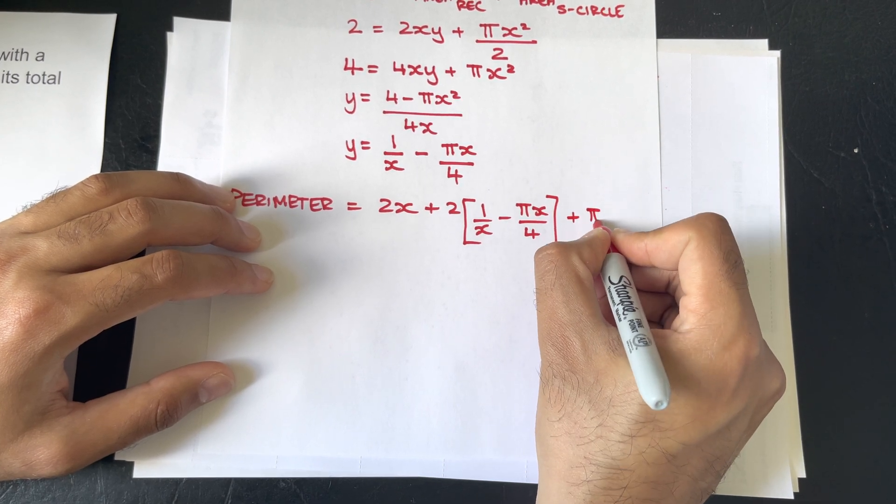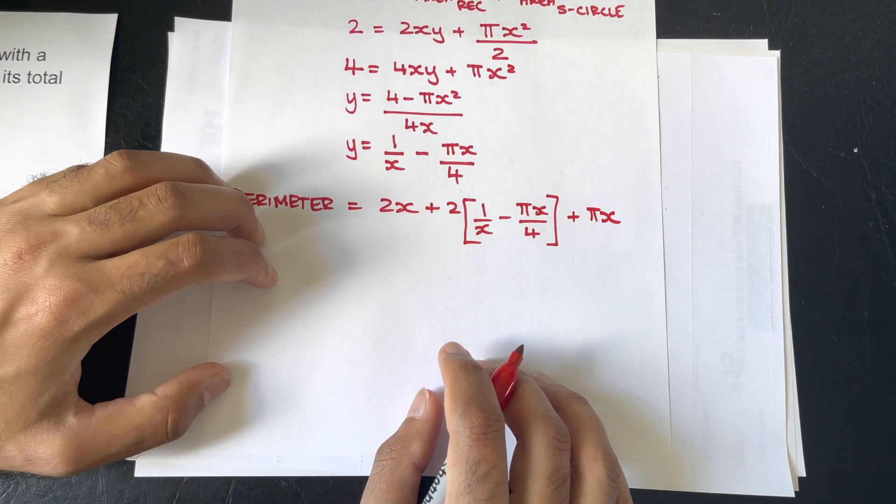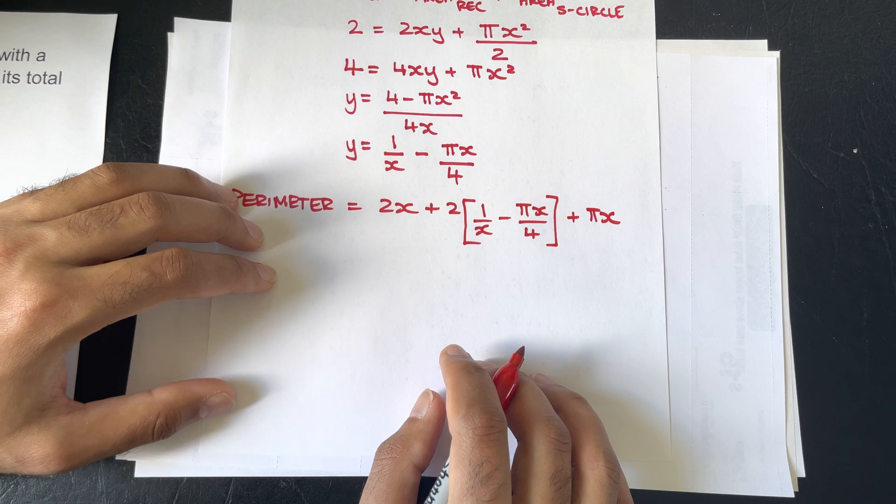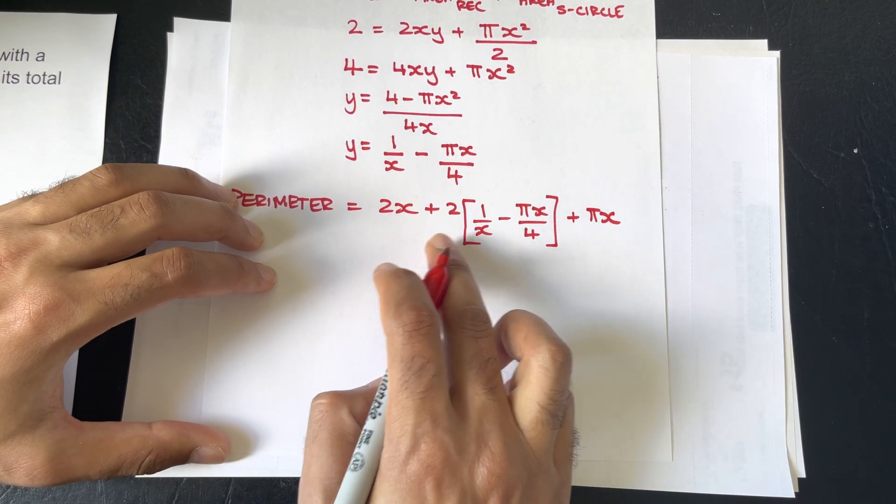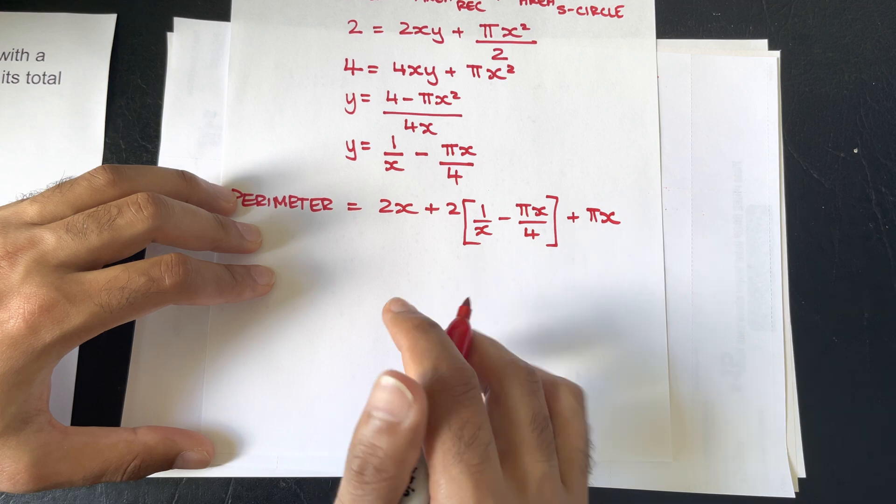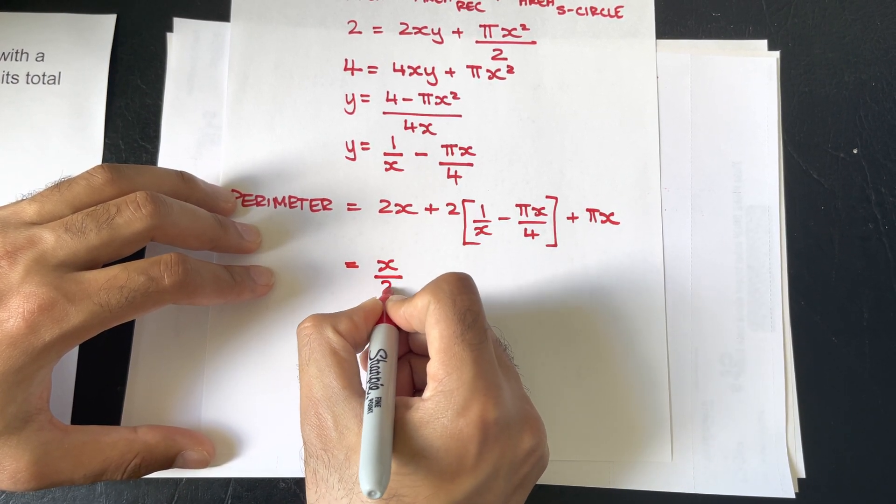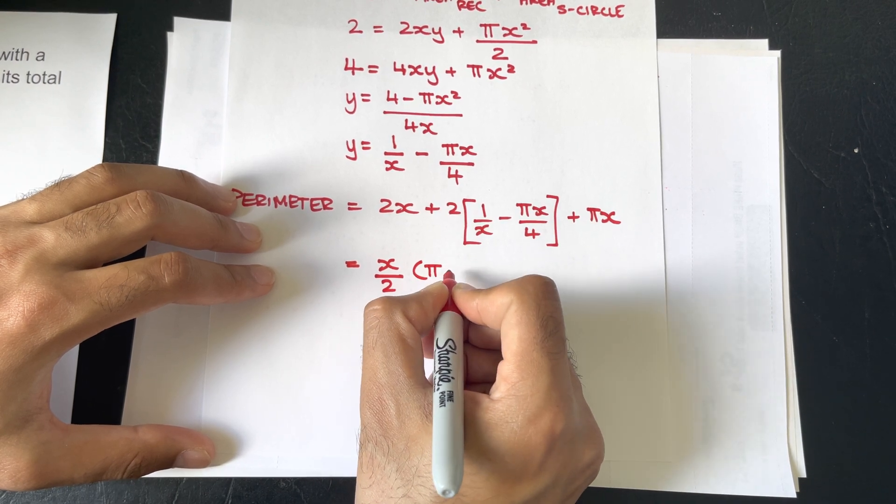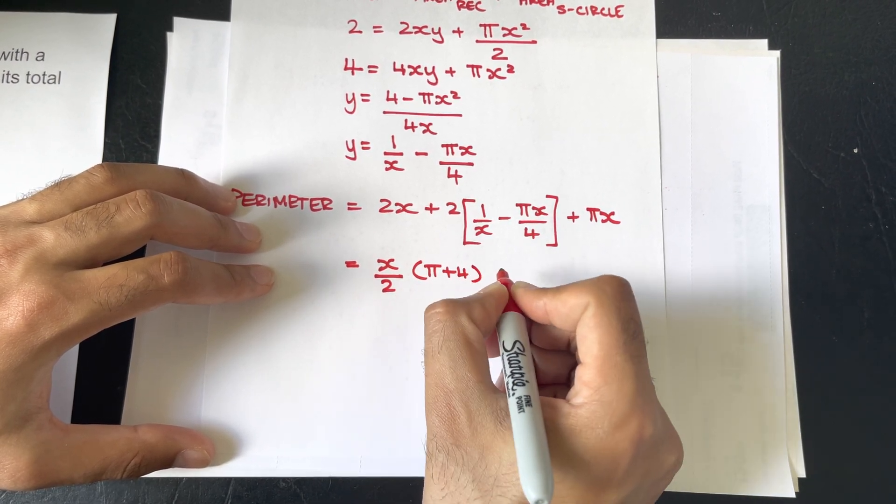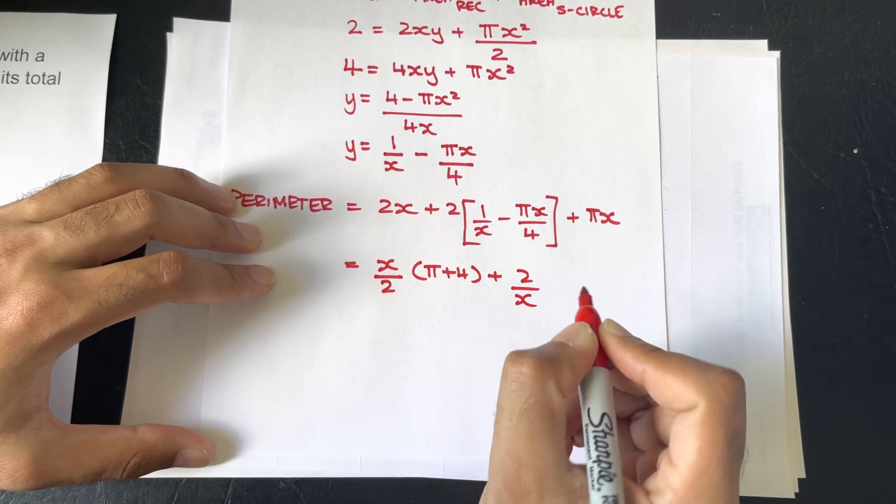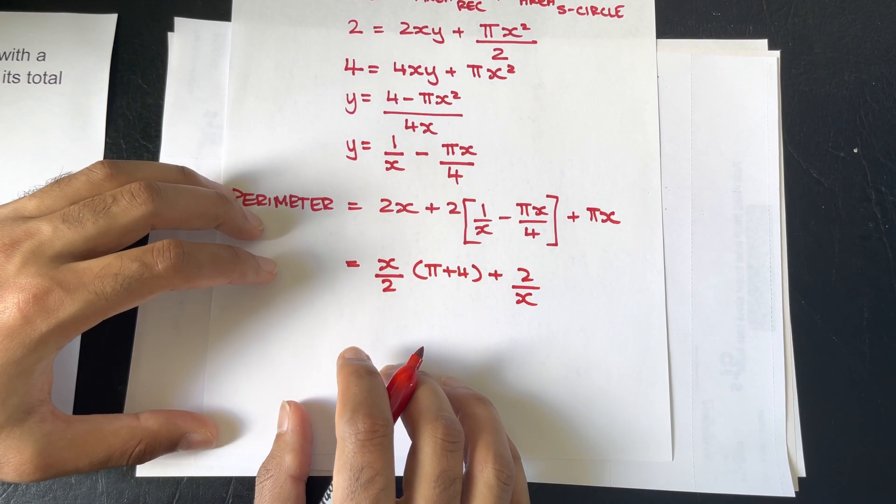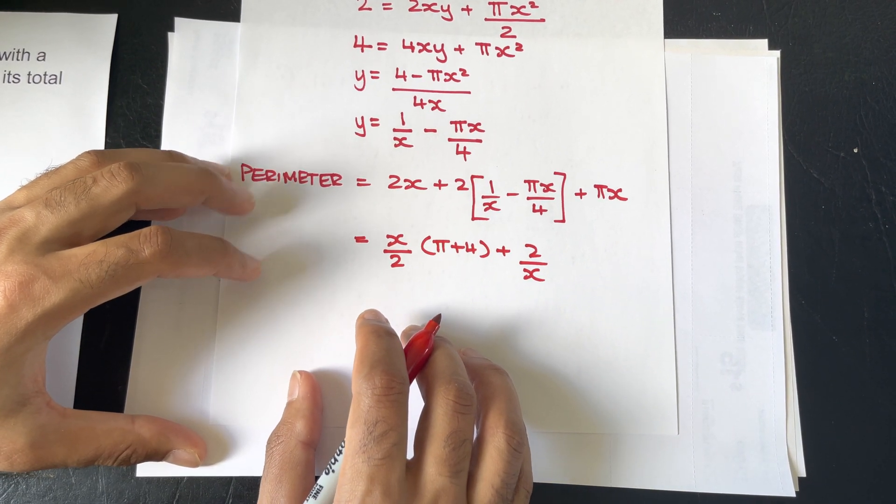And, just going to expand the 2 out, and collecting the like terms, you're going to be left with x over 2 times π plus 4 plus 2 over x. And, that is what we're going to take the derivative of.